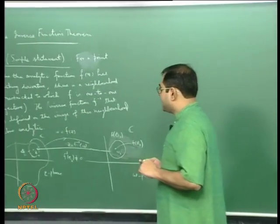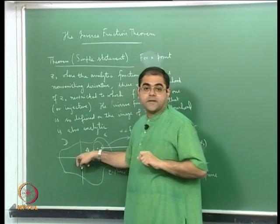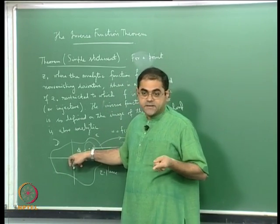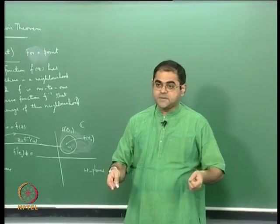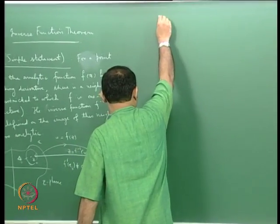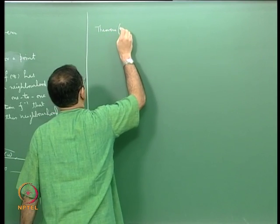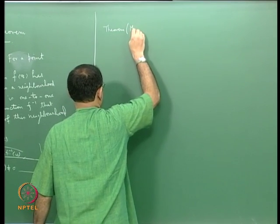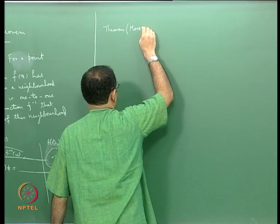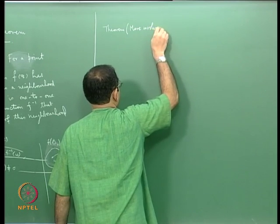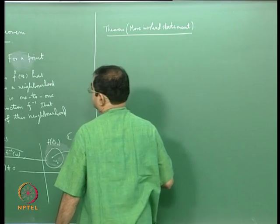The more complicated statement will tell you exactly what δ₀ is — how to calculate it — and will give you a formula for f⁻¹. That is the deeper statement.